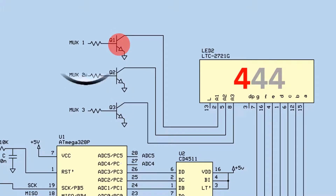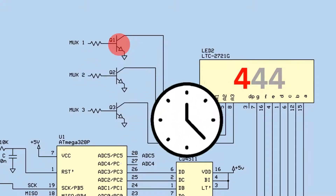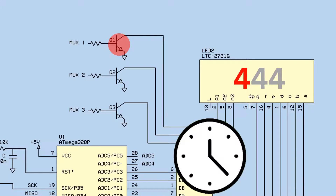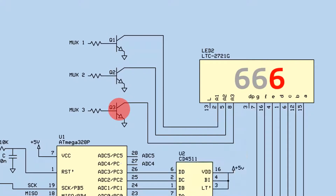We will use the timer and timer interrupt to perform the multiplexing timing. When the timer interrupts, the program will prepare the next digit for display.